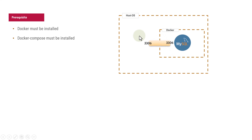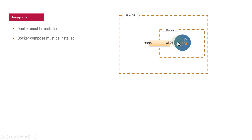This is important because your application running on the host operating system needs to connect to MySQL on port 3306. The request will come to the host OS port and will automatically be proxied to port 3306 of the Docker container. This is the whole setup we are going to do.